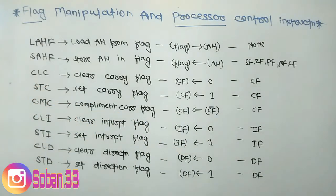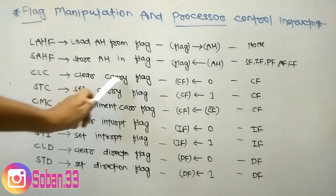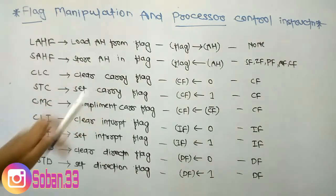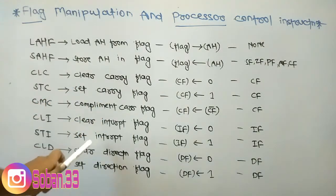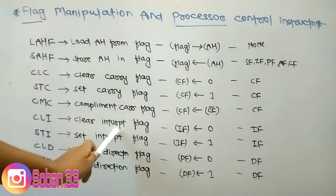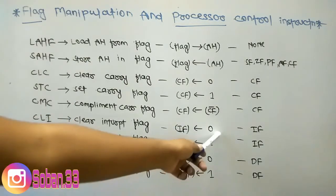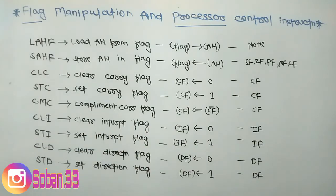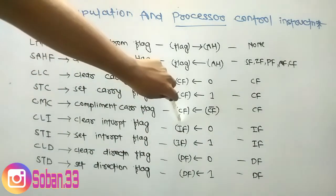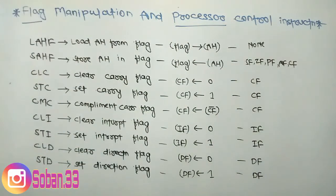CLI means Clear Interrupt Flag. Just like we cleared the carry flag by setting its value to zero, here we clear the interrupt flag — its value is set to zero. We are working with the interrupt flag, so the interrupt flag will obviously be affected.